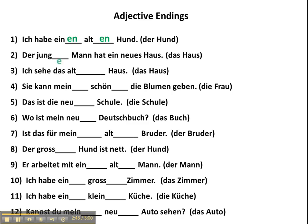Der junge Mann hat ein neues Haus. This is the subject of a sentence, so it's nominative. You have a definite article — der — so the ending is -e. Ich sehe das alte Haus. This is accusative, but you have a definite article with a neuter noun — in this case das — so ich sehe das alte Haus.